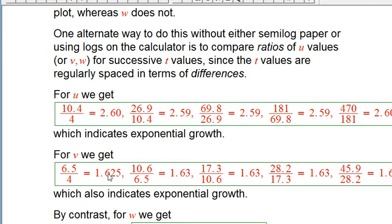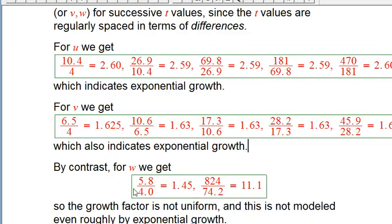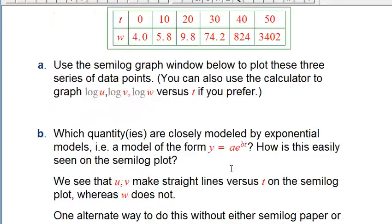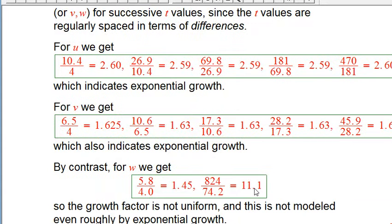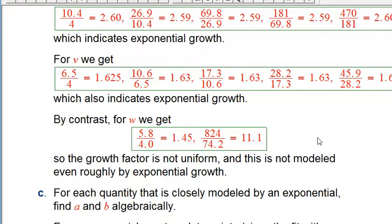Similarly for v, it's a very similar calculation, but a different ratio, about 1.63 each time. But that's exponential growth. So that's a really nice low-tech way to think about it. And it's directly related to the idea of checking if a sequence is geometric. For w, you can look at some ratios. The first two is 5.8 over 4.0, 1.45, a little bit weaker than the growth we're seeing in v. But then 824 over 74.2, that's the second-to-last one for the third-to-last one. That's an explosive growth compared to that. But it's 11.1. These ratios are not the same. It is not uniform growth factor, not a constant growth factor. And so it's not close to exponential growth.